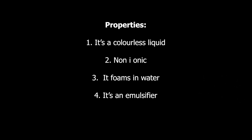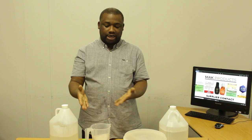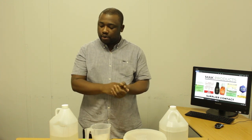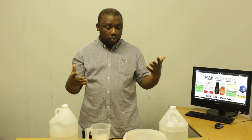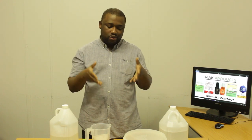Property number four: NP9 is an emulsifier. That means if I mix oil with water, NP9 will take away the separation and make water and oil mix together. If you never knew that NP9 can be used as an emulsifier, you're going to see that in this video as part of the experiment.